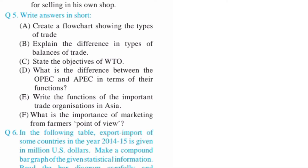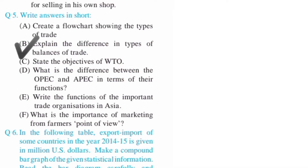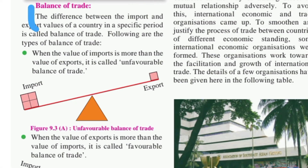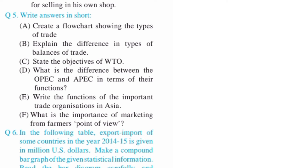Question number five, short answers. A) Create a flowchart showing the types of trade — the answer is on page number 69; you have to draw this flowchart. B) Explain the difference in types of balance of trade — the answer is on page number 70. The difference between the import and export values of a country in a specific period is called the balance of trade. When the value of exports and imports is almost the same, it is called a balanced balance of trade.